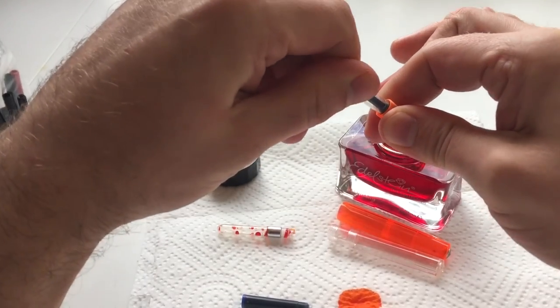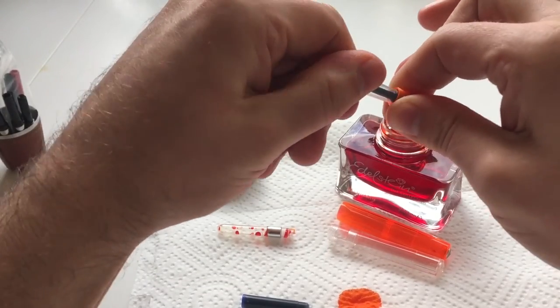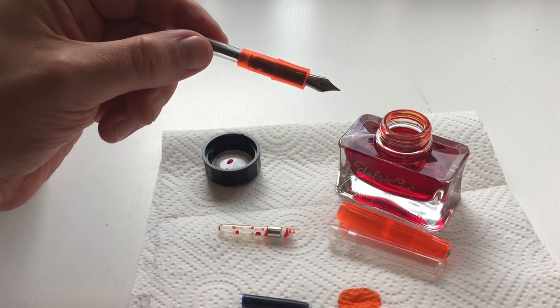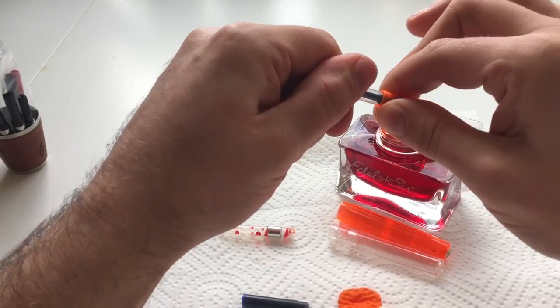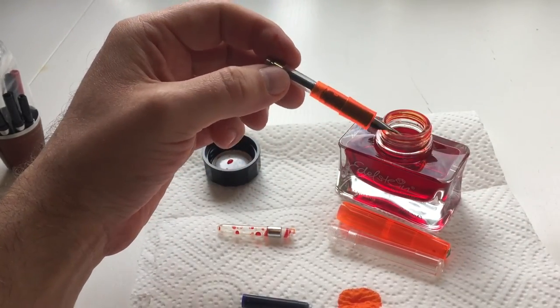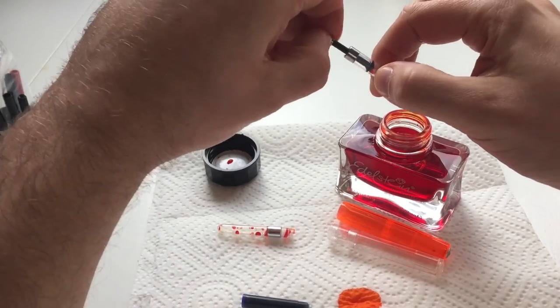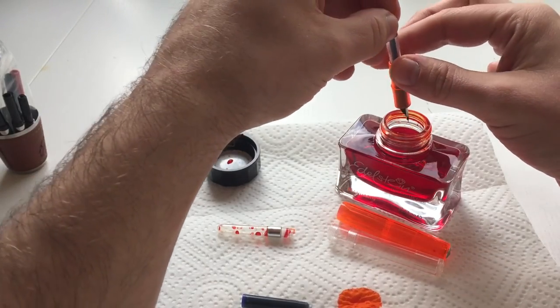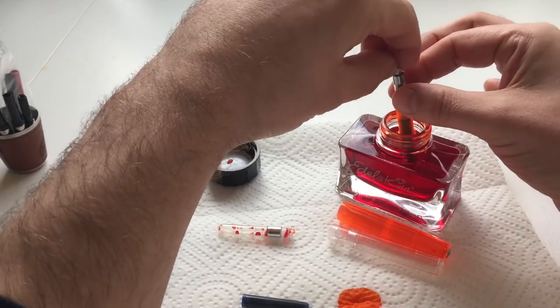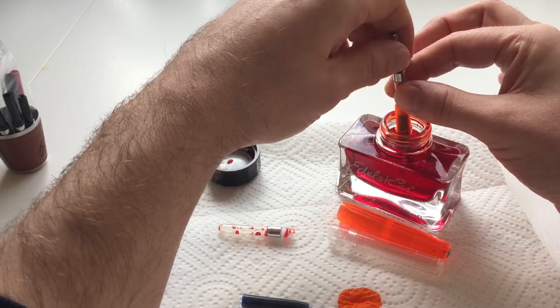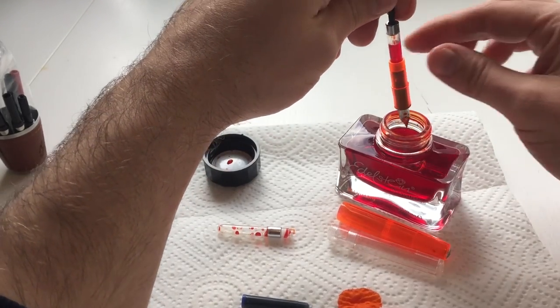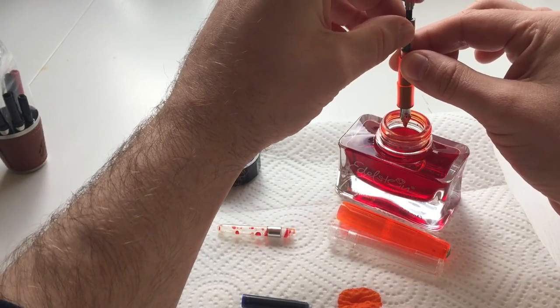The piston converter is now inside the pen, inside the nib unit. Kaweco always recommends, as you normally do with all fountain pens, to always fill the pen through the nib unit and feed because the feed will then already be primed, which is what you normally want to have. Let's see how that works. Submerge nib and feed and pull the converter out.